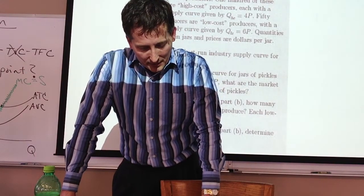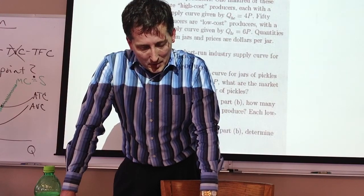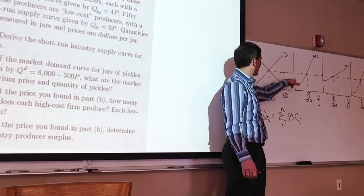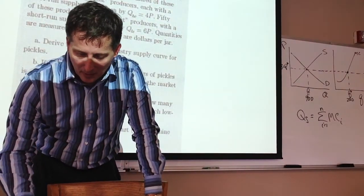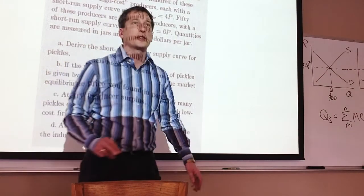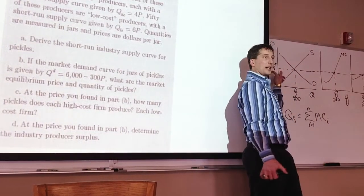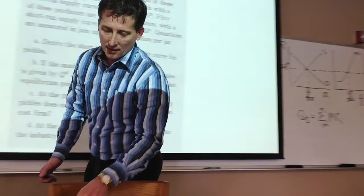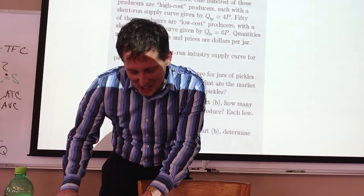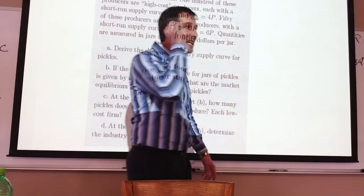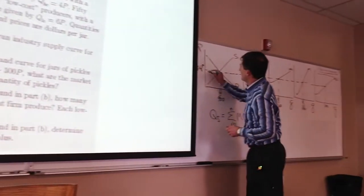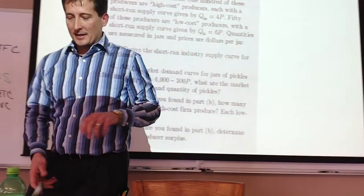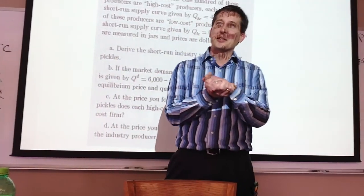All right. So, we're going to derive the industry supply curve. If the market demand now for pickles is QD equals 6,000 minus 300P, what are the market equilibrium price and quantity of pickles? Okay. So, we're right back to here. Now, we've got a functional form here. Once we've derived this from the information, find where supply equals demand. At the price you found in part B, how many pickles does each high cost firm produce and how much does each low cost firm produce? Now that we've found this, we're going to work backwards and figure out high cost person, how much? Low cost person, how much? And then, finally, we're going to calculate producer surplus back in just for fun. At the price you found in part B, determine the industry producer surplus. What is this area? All right. We'll pick up there on Wednesday. Exam number two is next Monday. I meant to talk about that earlier, but kind of got forgotten.